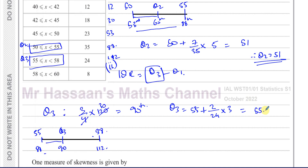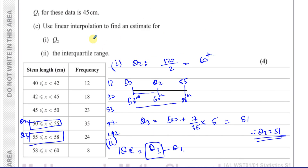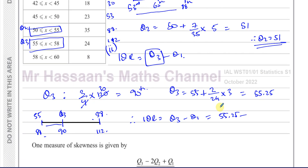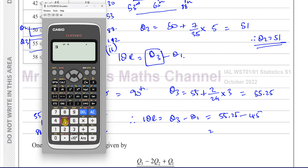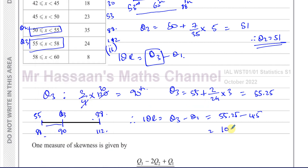That gives us Q3 = 55.25, which is our estimate of the upper quartile. Therefore the interquartile range = Q3 − Q1 = 55.25 − 45 = 10.25. So 10.25 is the interquartile range.